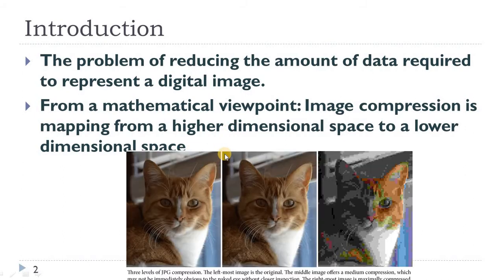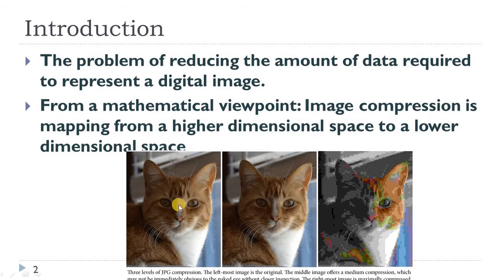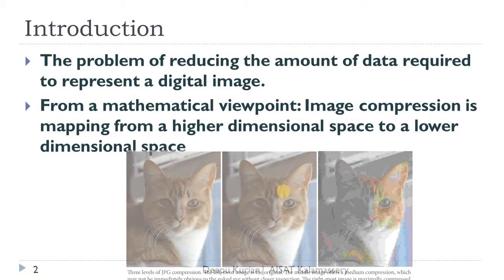We can see one example of image compression using a cat image. The leftmost figure is the original cat image, the middle one is a moderately compressed cat image, and the rightmost one is a maximally compressed cat image. As we go for more compression, the quality of the image degrades. However, for the middle one, a human visual system cannot find much difference between the first and second images, but the size of the image is compressed to a great extent.